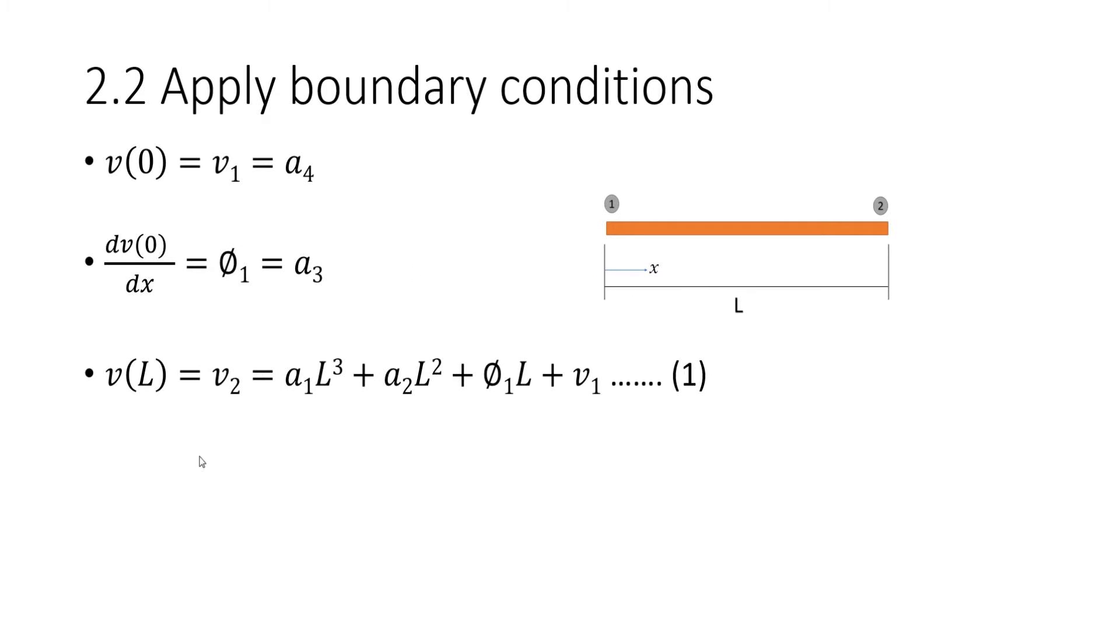And also the displacement at L is going to be V2 and you get that equation when you plug L into the displacement function. And again, also for the rotation at node 2, you just put L into the derivative and then you get phi2 is equal to that.